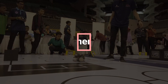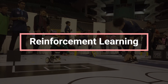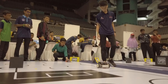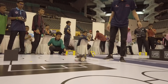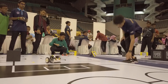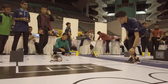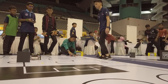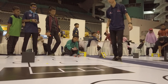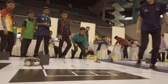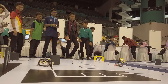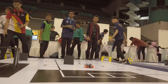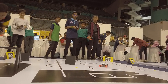The third type of machine learning is reinforcement learning. In reinforcement learning, an agent learns to make decisions by interacting with an environment and receiving feedback in the form of rewards or penalties. This trial and error approach allows the agent to learn optimal behaviors over time.